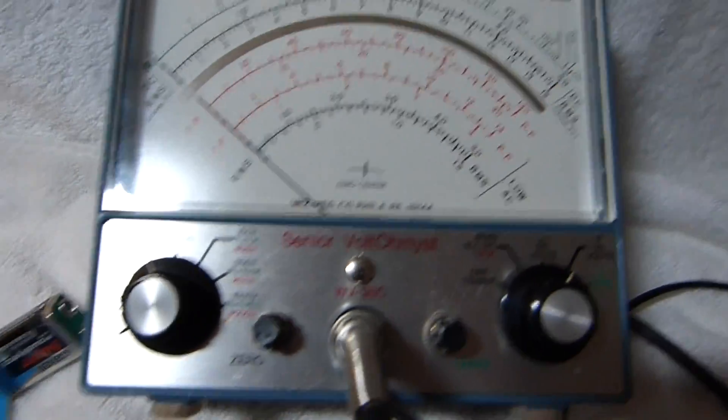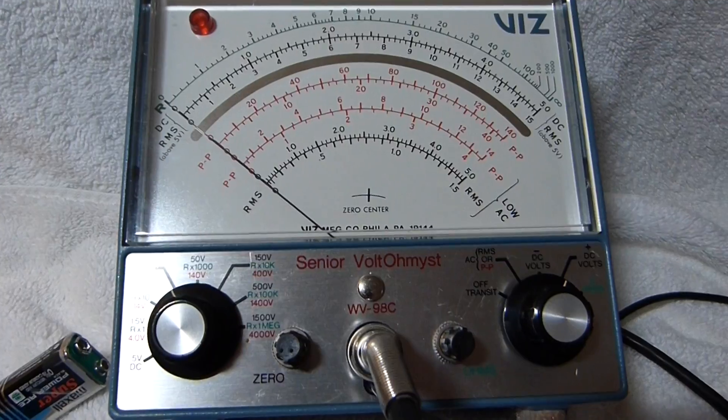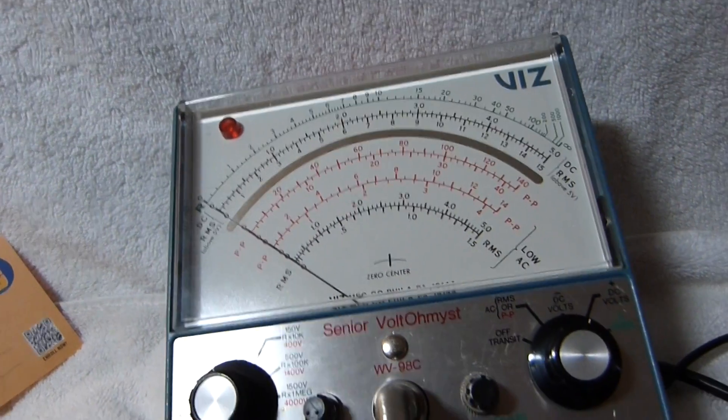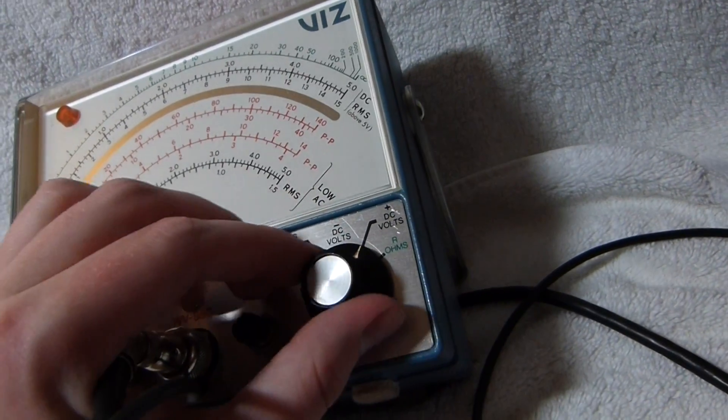Unlike a digital meter, you also have to keep zeroing this thing when you change ranges, which is a little bit annoying. So let's switch it over to ohms.